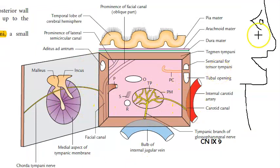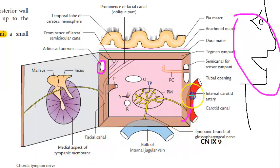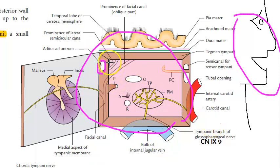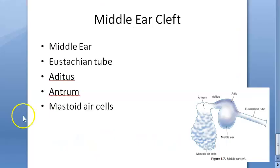If you are looking into the middle ear — imagine you have opened the tympanic membrane and you're looking inside — you would see the aditus ad antrum right there. So they are talking about the middle ear itself, plus the eustachian tube, plus the aditus, antrum, and mastoid air cells.